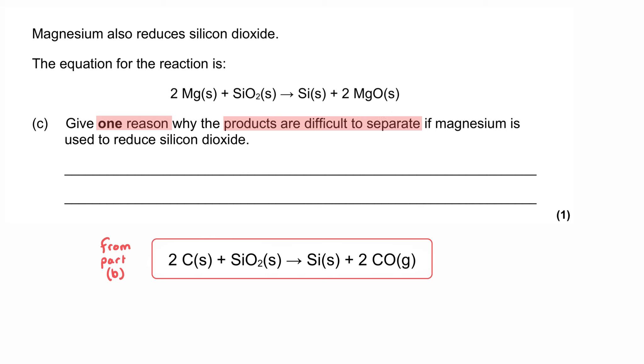Whereas when we used carbon, we produced carbon monoxide, which was a gas. And so the difficulty arises in this case because both of our products are a solid. And that means how do we separate one solid from another?